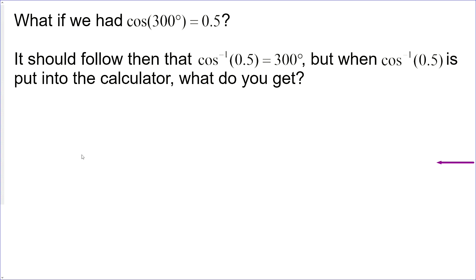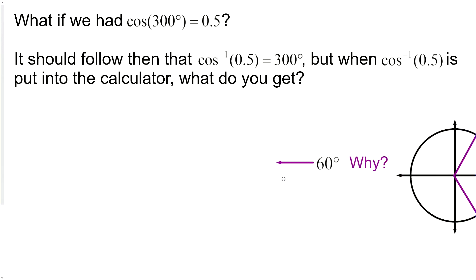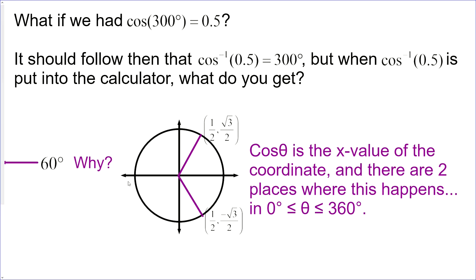What if we had cos(300°) and put that in our calculator? We would get 0.5. Then it should follow that when we do cos⁻¹(0.5) we get 300°, but when we actually try that, we get 60°. Why would that be? Let's look at the unit circle — cosine is the x-value of the coordinate, and you can see that it can be 0.5 at 60° and also down at 300°.